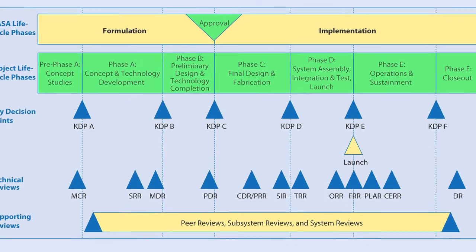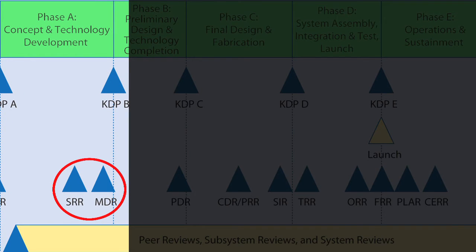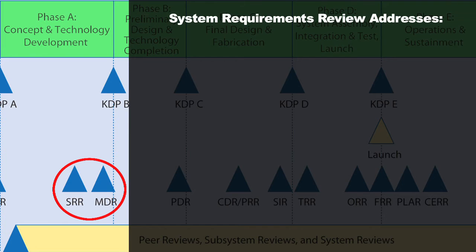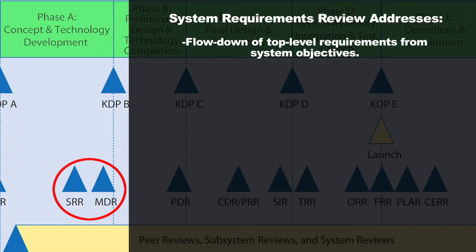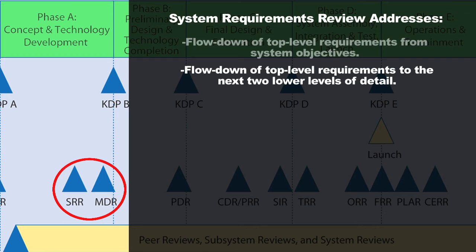The primary technical reviews in Phase A include a System Requirements Review and a Mission Design Review. The System Requirements Review brings in the external technical team to assess whether your top-level requirements have been clearly defined and whether they fit with the stakeholder-defined system objectives — checking if the flow-down was done correctly. The team also checks whether those requirements were taken down to the next couple of levels to form a complete set of high-level requirements capable of meeting the system objectives.